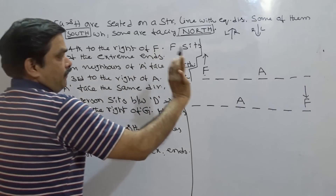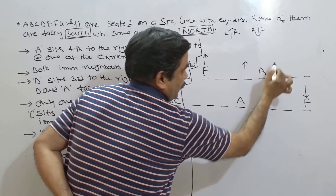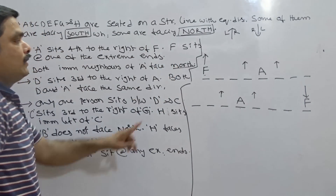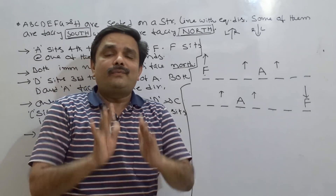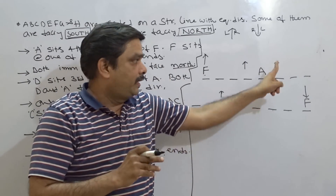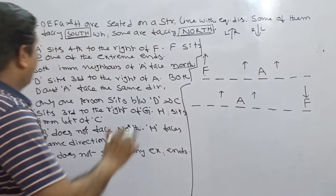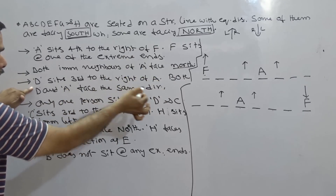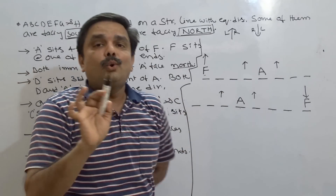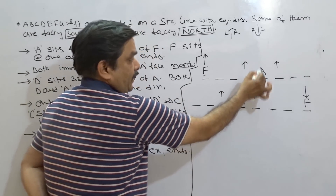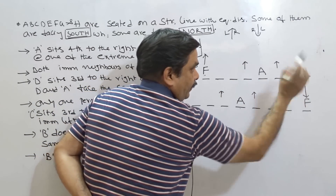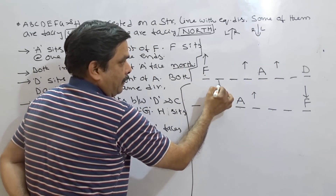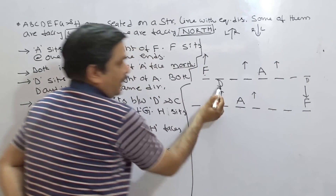Every time you take a new piece of data, you have to think: am I able to eliminate any of the possibilities with this given information? Now take the next clue: D sits third to the right of A. I don't know whether A is facing north or south. If A is facing north, counting 1, 2, 3 - it should be D. But equally A can face south, and then counting 1, 2, 3 the other way - it can also be D. So D can be either here or here. Don't confirm it yet.